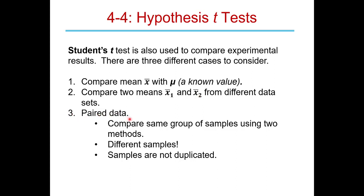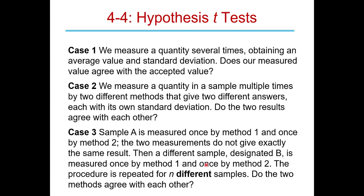In the paired t-test, we have multiple different samples — like blood from person A, person B, and so on — and we compare results from two methods applied to each. Cases 1 and 2 involve replicate samples of the same material, whereas Case 3 uses truly different samples measured by two different methods.